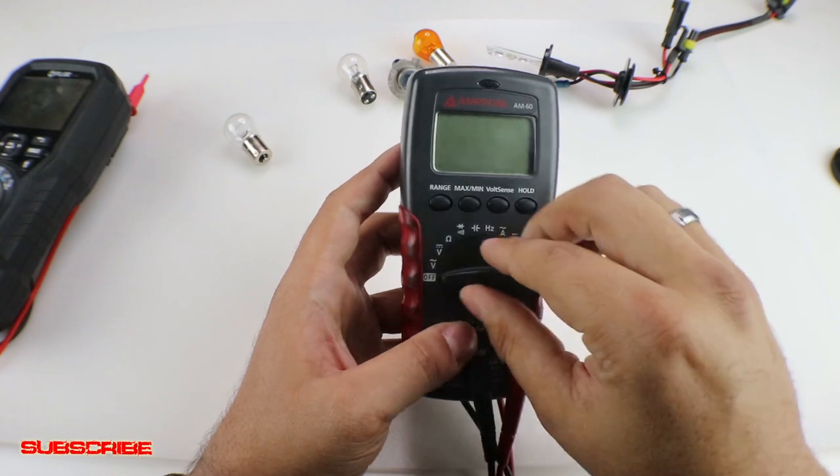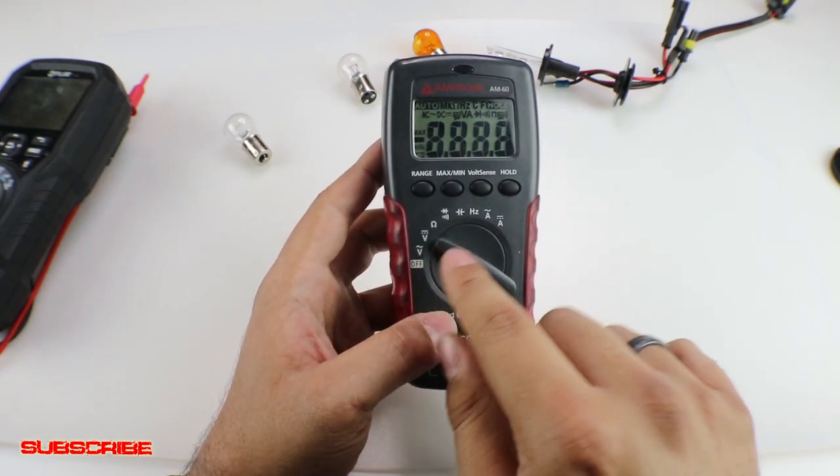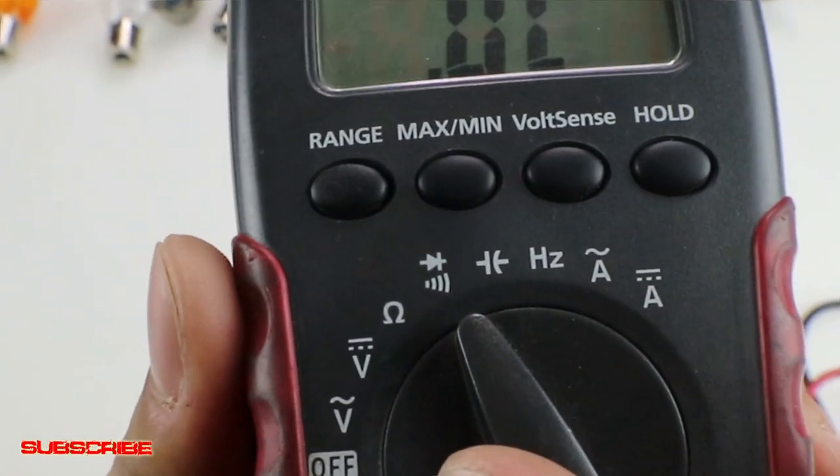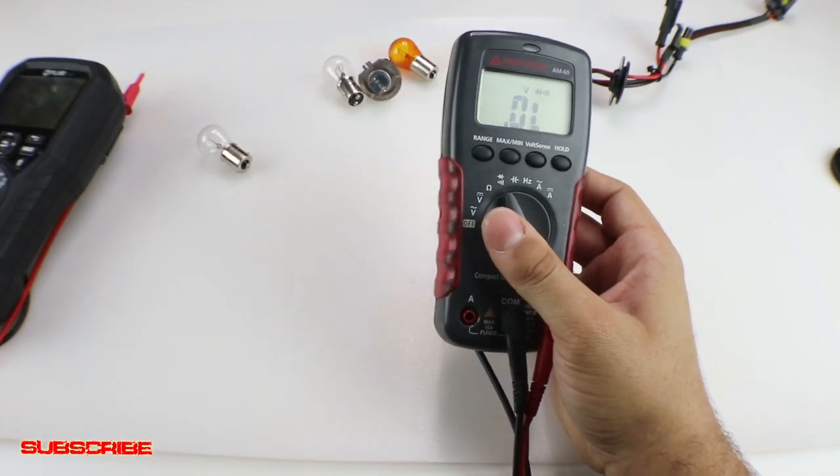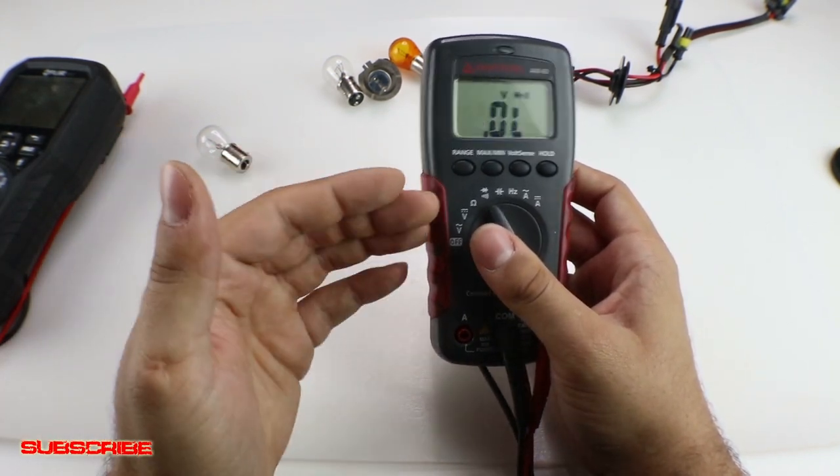So first thing you're gonna do is you're gonna set the dial to the continuity setting, and I'll post that on the screen so you guys can see what that looks like. Just about every multimeter should have this. You should be making sure you have a multimeter that has this. This is one of the more important settings.